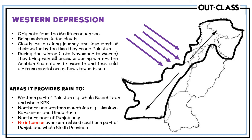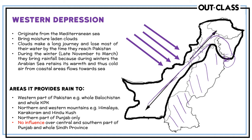You can see on the map that the whole of Balochistan region and most of the KPK region experience these western depressions. The north-western mountains and northern mountains all experience these. Very little of the tail end reaches Punjab, and specifically Lahore gets very little of it, so it does not really affect the Punjab region generally, though it might get a little tail end of these rains.